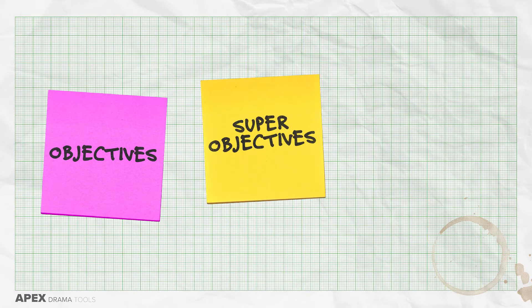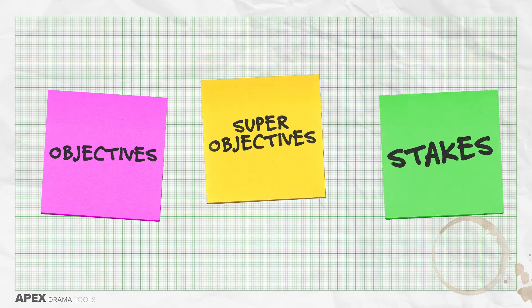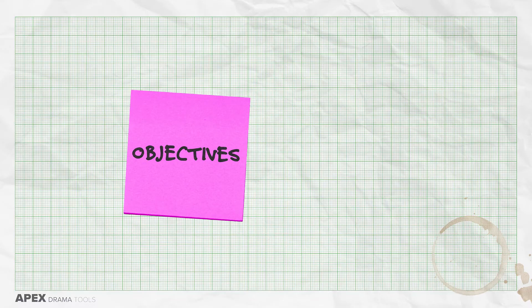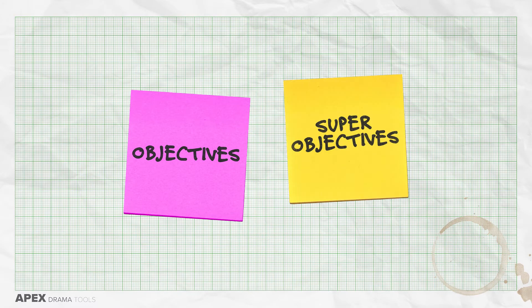Objectives, super objectives, and stakes are three key ideas that you can apply to any acting you do, and they're some of the most important fundamentals of Stanislavski's method. Let's start with objectives and super objectives.